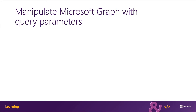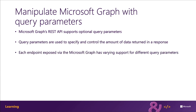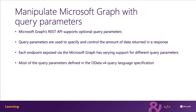Microsoft Graph's REST API conforms to the OData v4 protocol, and one aspect of this is that the REST API supports many query parameters. These parameters enable developers to specify and control the amount of data returned in the responses. Each endpoint exposed by Microsoft Graph has varying support for different query parameters.